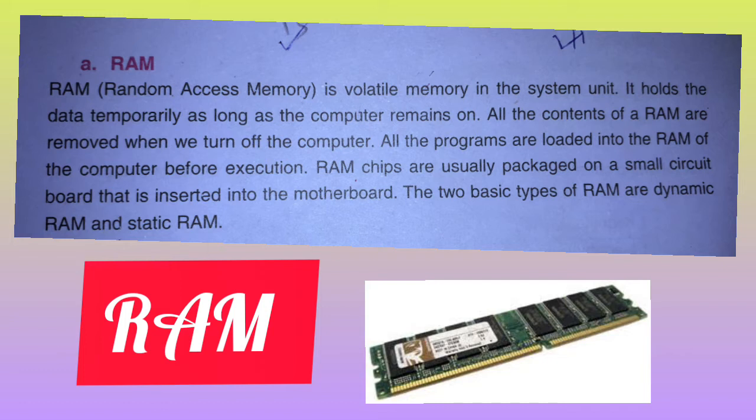RAM is called volatile memory. Whenever the CPU wants to process data, that data or instruction is loaded into RAM from backing storage. RAM chips are usually packaged on a small circuit board that is inserted into the motherboard. There are two types of RAM: Static RAM and Dynamic RAM.